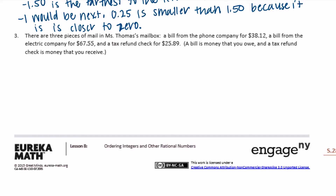Number 3. There are 3 pieces of mail in Ms. Thomas' mailbox: a bill from the phone company for $38.12, a bill from the electric company for $67.55, and a tax refund check for $25.89. A bill is money that you owe, so it's negative. So we have negative 38 and 12 hundredths, negative 67 and 55 hundredths, and then a tax refund check — so you're receiving money — positive $25.89.